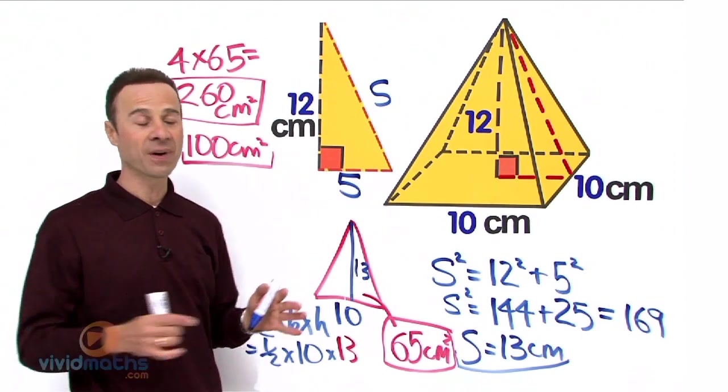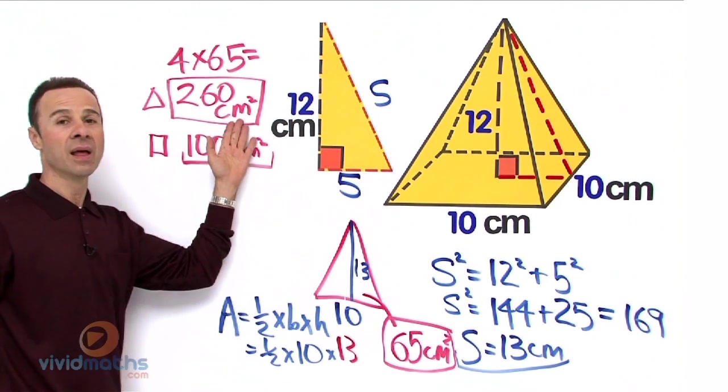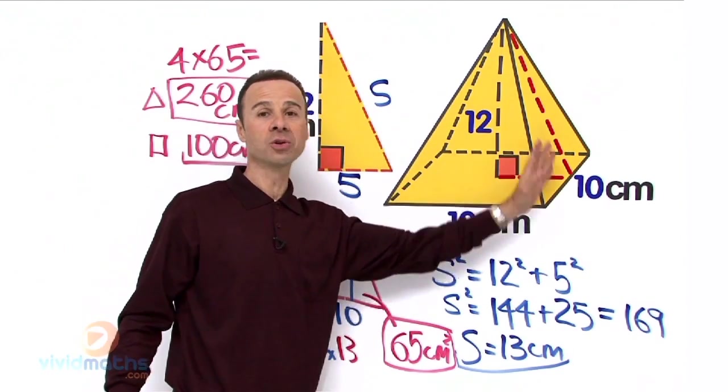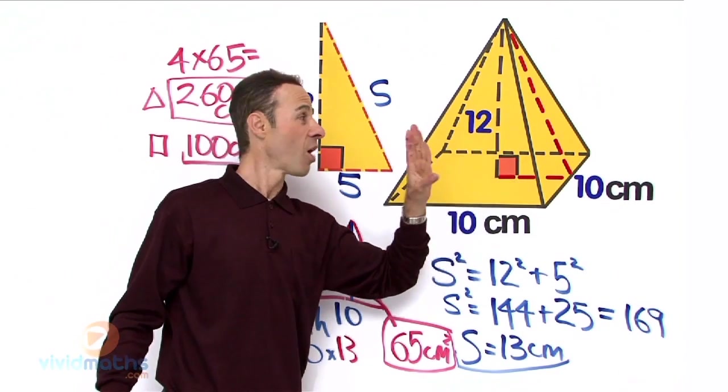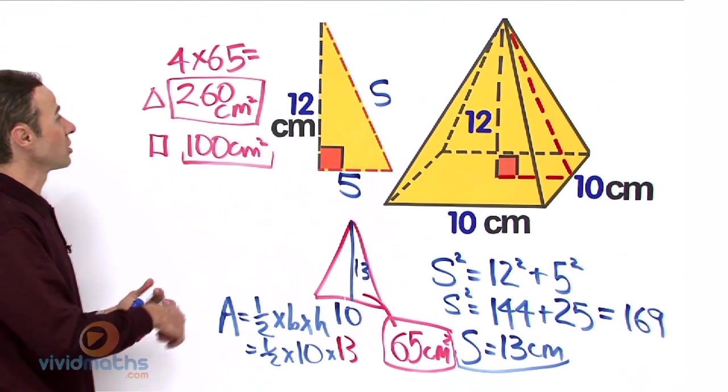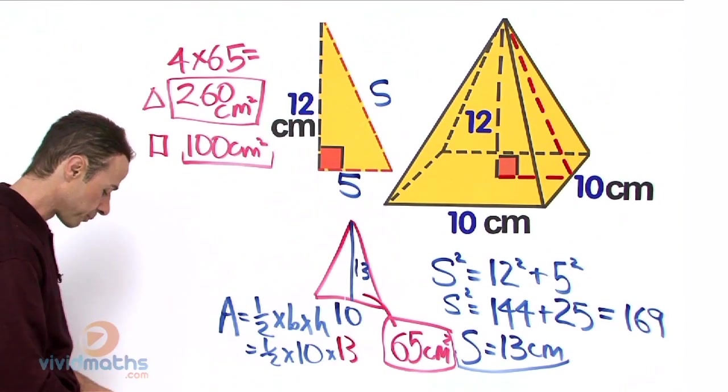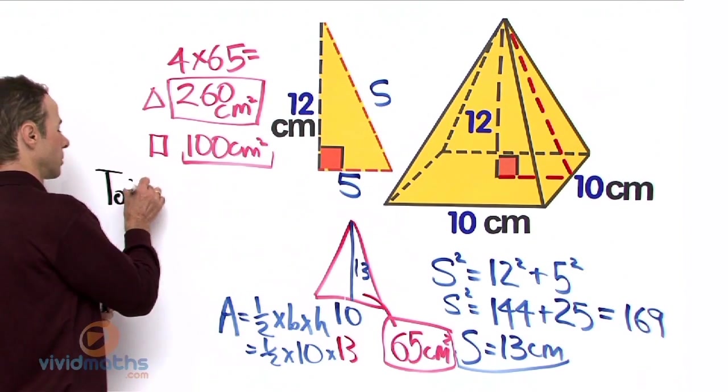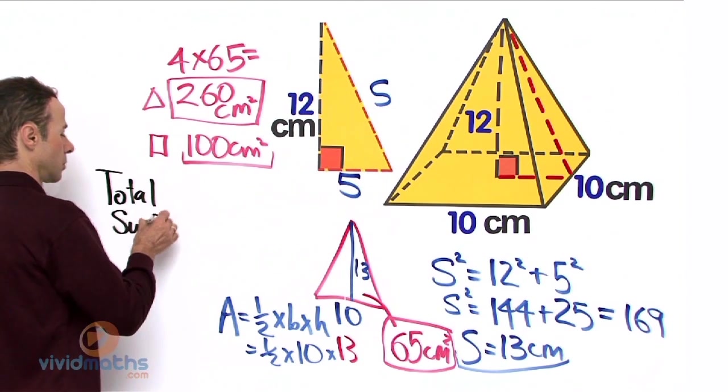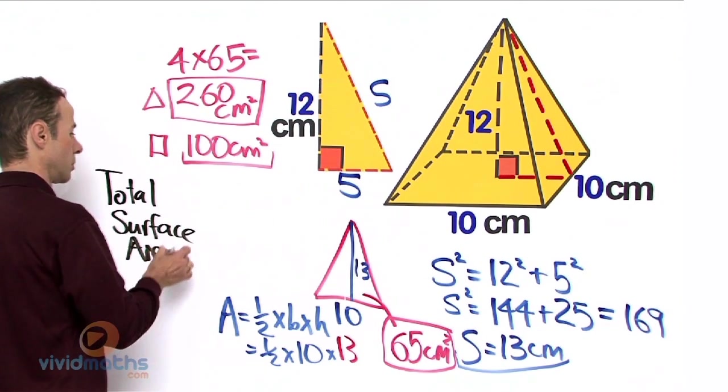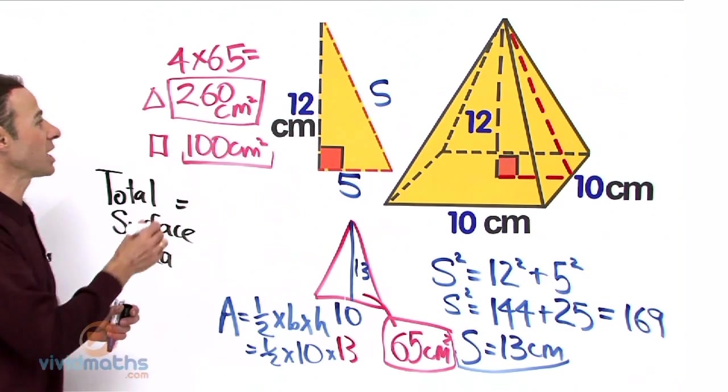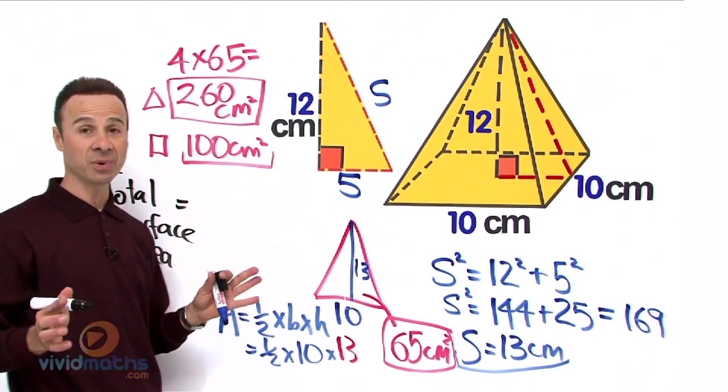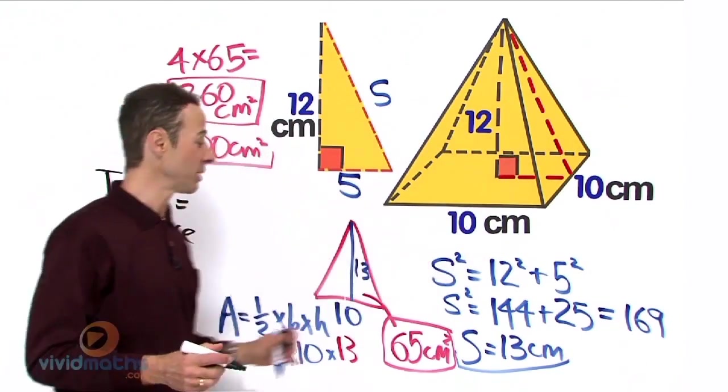What we need to do now is add up all 5 faces. There are 4 here for the triangle and there is 1 square base. Add that together and that is going to give us the complete entire total surface area skin covering of this square pyramid. So let's work that out now: 260 plus 100. Add 100 to 260 is 360, and that is in cm squared, the total surface area of this square pyramid.